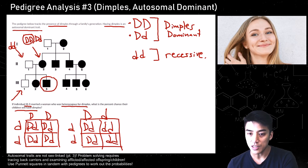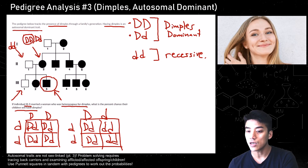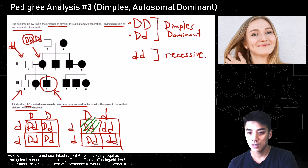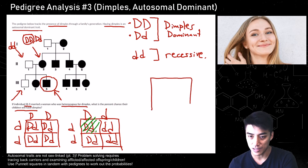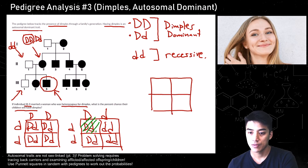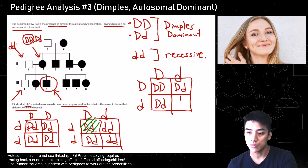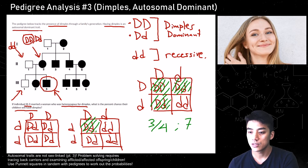We do the Punnett square crosses and see there's the possibility for children to be unaffected — confirming the mother, individual 2,2, is heterozygous dominant. That means individual 3,3 has to be heterozygous dominant as well, big D little d — he has dimples. He's going to marry someone also heterozygous for dimples. After doing the Punnett square, there are three out of four possibilities for dimples, giving a 75% chance that their children will have dimples.